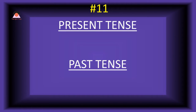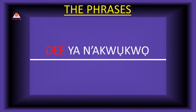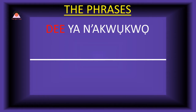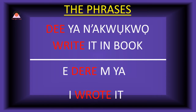Word number eleven: 'de,' meaning 'write.' The past tense of de is 'dere,' meaning 'wrote.' Present tense phrase: 'deya na akoko' — write it in a book. Past tense: 'e-dere miya' — I wrote it.